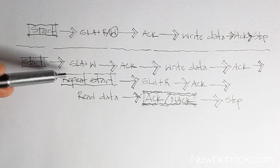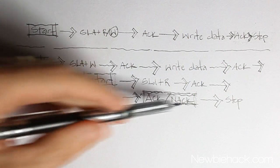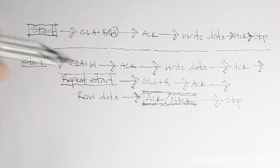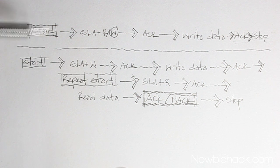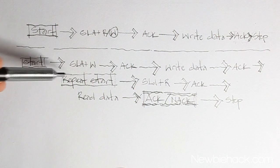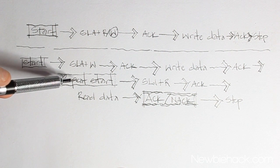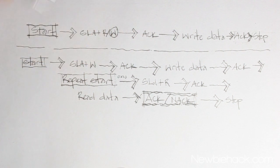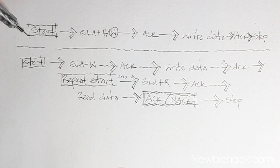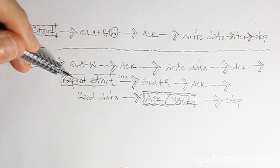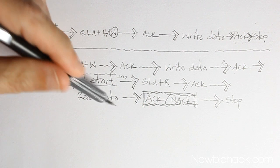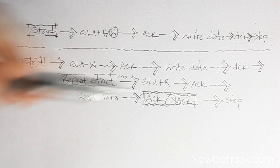The only thing left to explain is the repeat start, reading data, sending an ACK or NACK, and a stop. The repeat start is exactly the same as the start condition. The only difference is that when doing a repeat start, your status register must equal a value of 0x10 — whereas a normal start returns 0x08. That's very important.